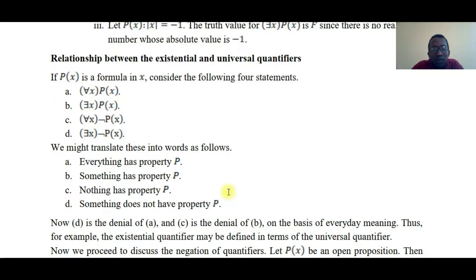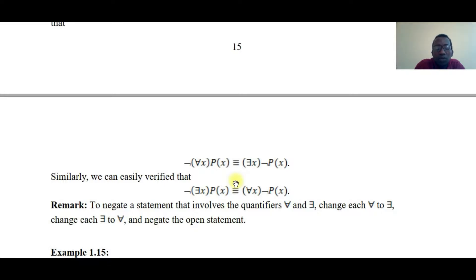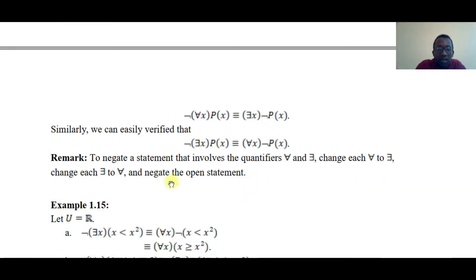Regarding negation of quantified propositions: if p(x) is a formula in x, consider these four statements: 'for all x, p(x)'; 'for at least one x, p(x)'; 'for all x, ¬p(x)'; 'for at least one x, ¬p(x).' These translate as: everything has property p; something has property p; nothing has property p; something does not have property p. The negation of 'for all x, p(x)' is 'there exists x, ¬p(x),' and vice versa — change the quantifier and negate the statement.